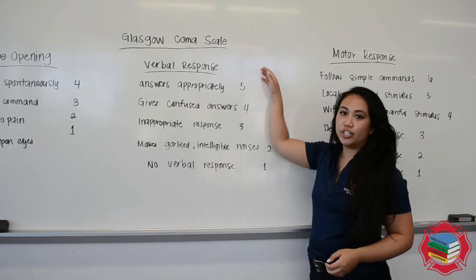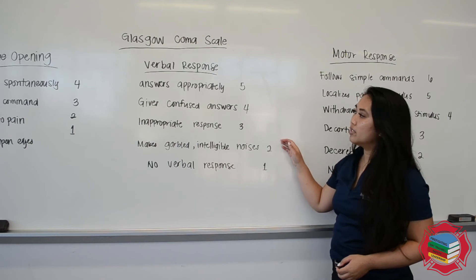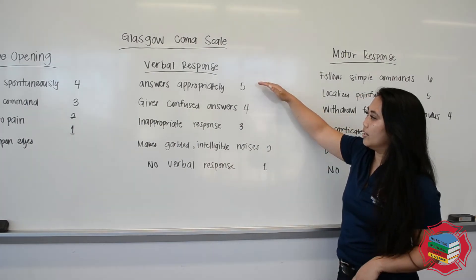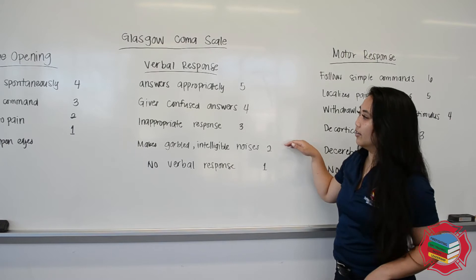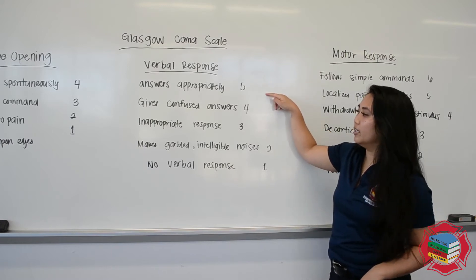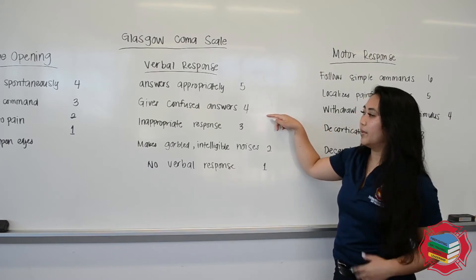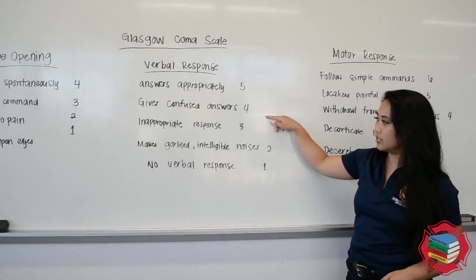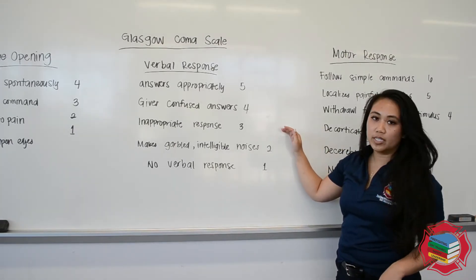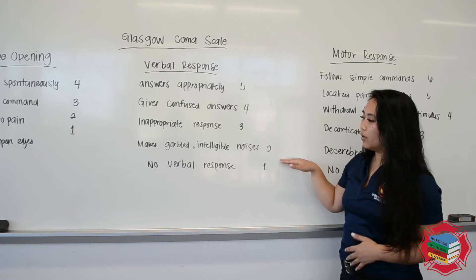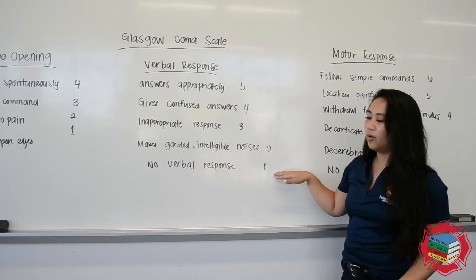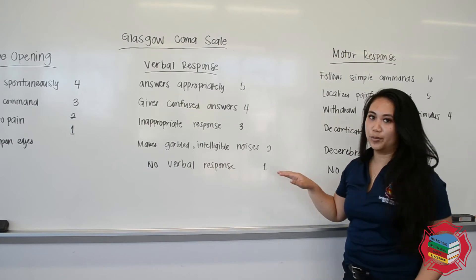After eyes, you're going to check their verbal response. This one goes on a 5, 4, 3, 2, 1 scale. For 5, it's going to be answers appropriately. For 4, the patient gives confused answers. For 3, it's inappropriate responses. For 2, it's garbled unintelligible noises. And for 1, no verbal response at all.